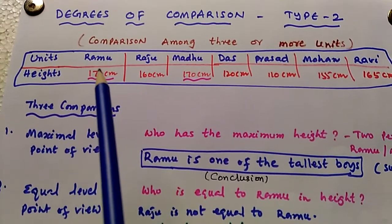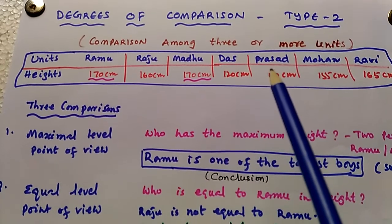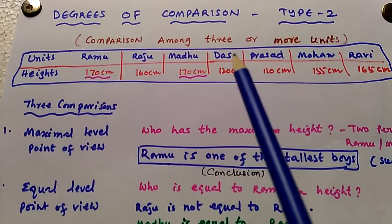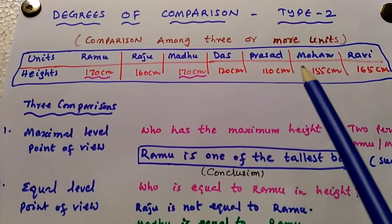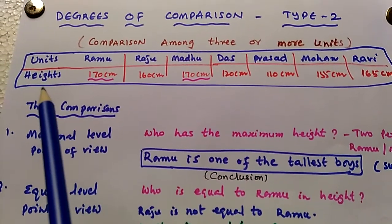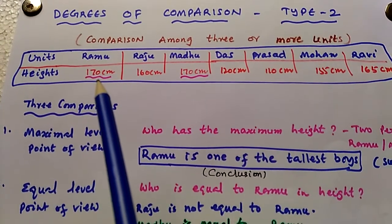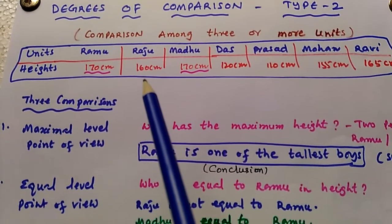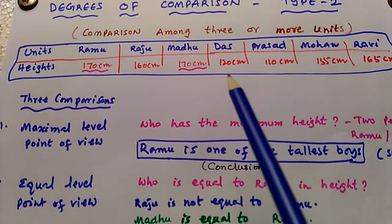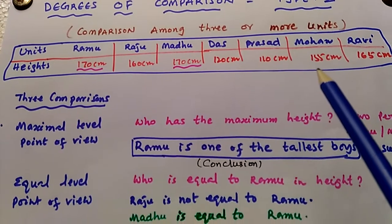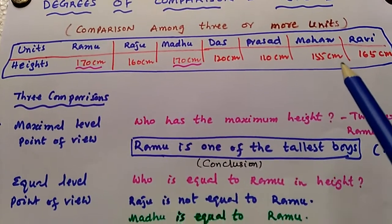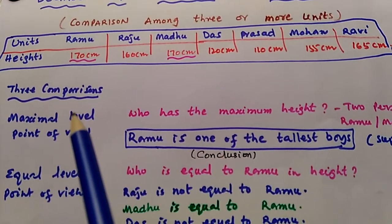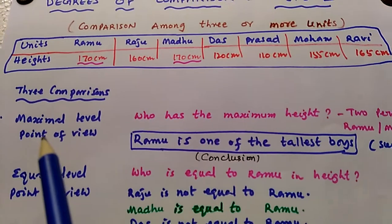Here are the units: Ramu, Raju, Madhu, Das, Prasad, Mohan, and Ravi. The comparison is made among three or more units. Here the heights are compared. Ramu's height is 170 cm. The heights are: 170, 160, 170, 120, 110, 155, 165 cm.